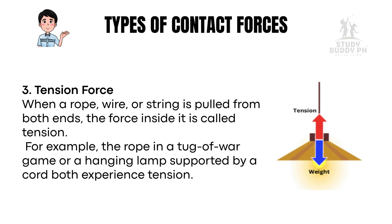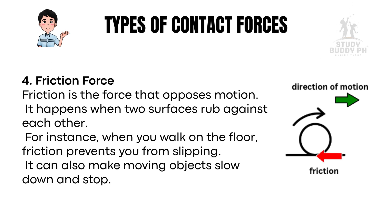Three: tension force. When a rope, wire, or string is pulled from both ends, the force inside it is called tension. For example, the rope in a tug-of-war game or a hanging lamp supported by a cord both experience tension. Four: friction force. Friction is the force that opposes motion. It happens when two surfaces rub against each other. For instance, when you walk on the floor, friction prevents you from slipping. It can also make moving objects slow down and stop.